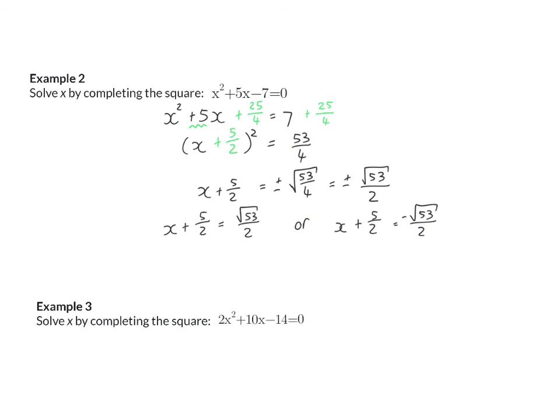If you now have a look at example three, you will see that it has one slight difference from the first two examples. In this example, we do not have one x squared anymore, but we now have two x squared. For our manipulation of the left hand side, we need a one x squared. So I'll have one extra step to start with, and that is to get rid of the two x squared by dividing by two right through. That will give me x squared plus five x minus seven equal zero. And now that I have only one x squared, you will see that it looks exactly like example two, so I can follow my normal steps.